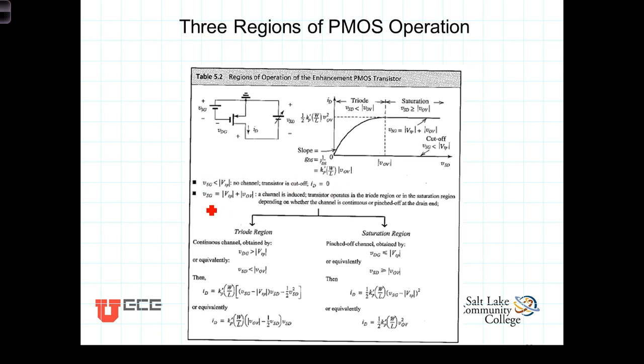For the situation where VSG, which is equal to the threshold voltage plus the overdrive voltage, when VSG is great enough to establish that channel, then we're either in the triode region or the saturation region.